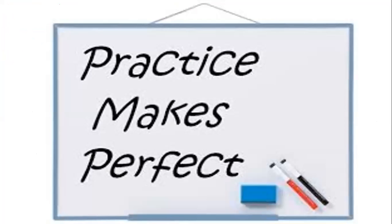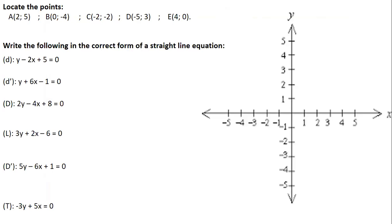Now we will start practicing exercises together. When I call your name, please unmute and answer me, because if you don't answer you will be considered absent and I will remove your name from the list. Don't be afraid if you don't know the answer — we will do it together. Please unmute and answer me when I ask you a question.